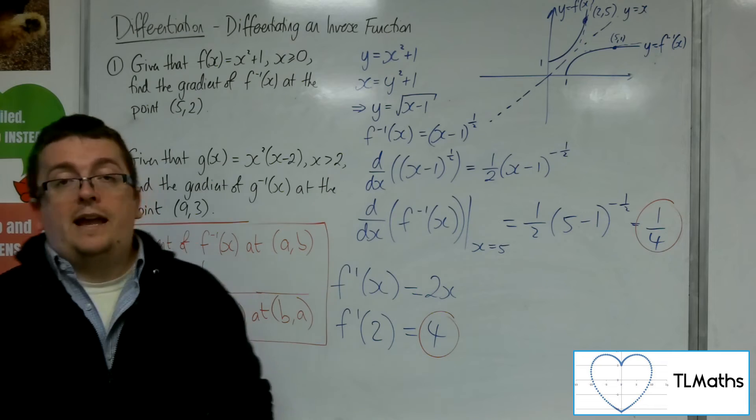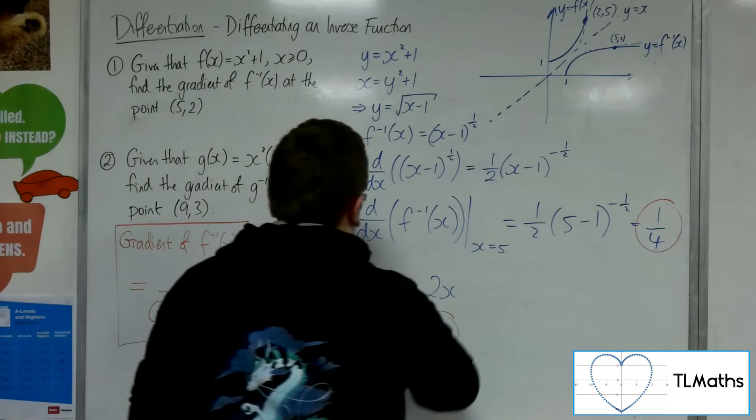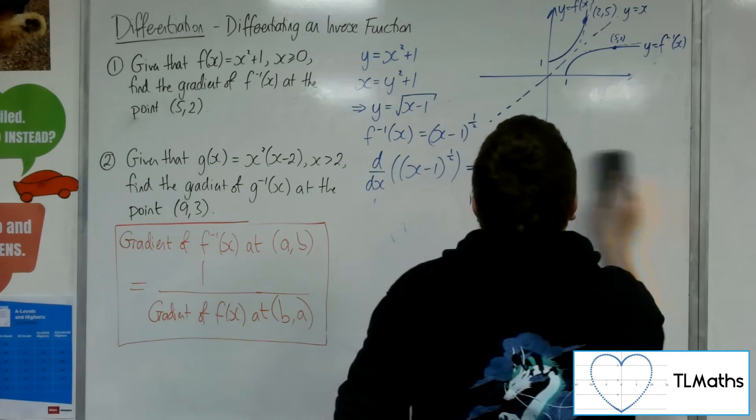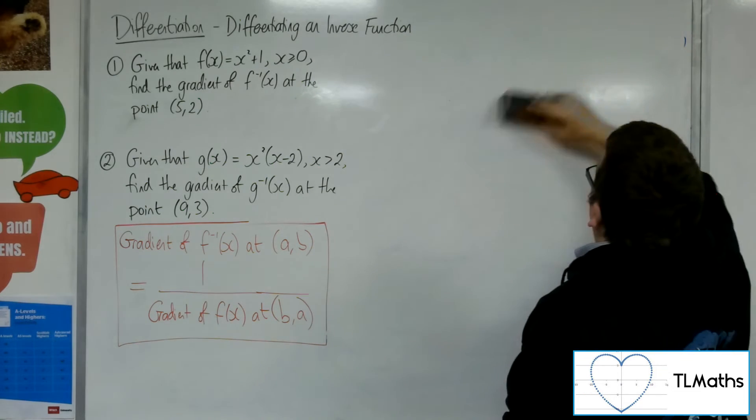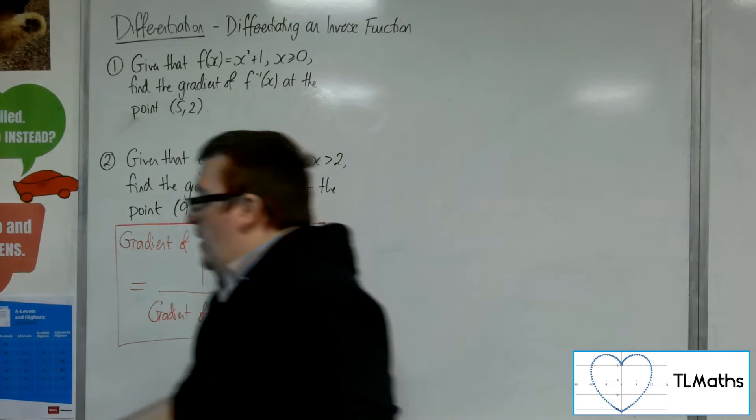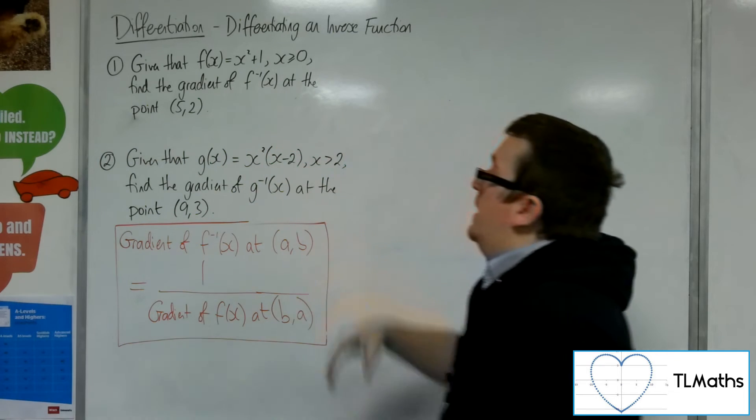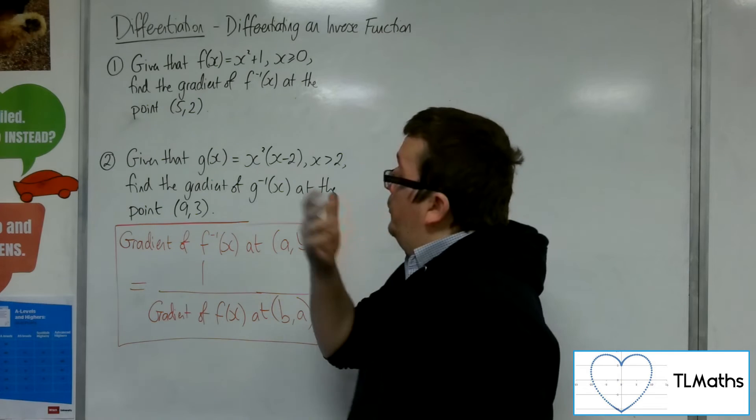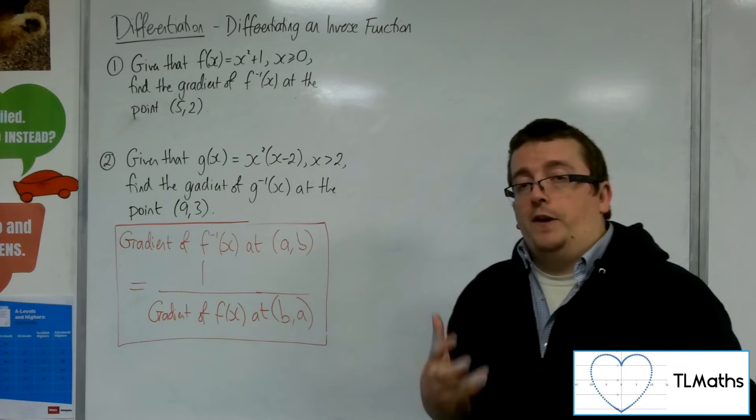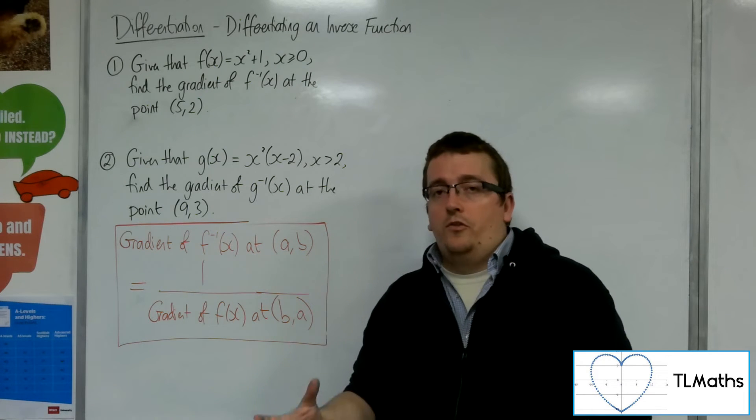Because if we look at problem number 2, when I look at problem number 2, I've got a situation where I've got this g(x) equals x squared (x minus 2). And I want to find the gradient of the inverse function of g at the point (9, 3).